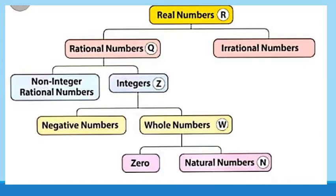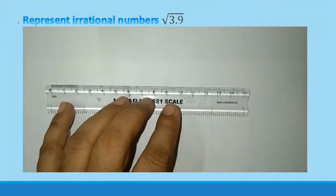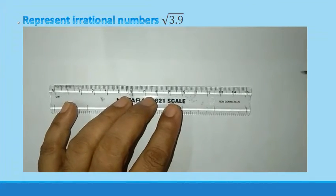See here real numbers divided into the rational numbers and irrational numbers. Rational numbers are further divided into non-integer rational numbers and integers. Integers are further divided into negative numbers and whole numbers and then the whole numbers further divided into zero and the natural number. So the whole real number system. Presentation of irrational numbers on the number line.